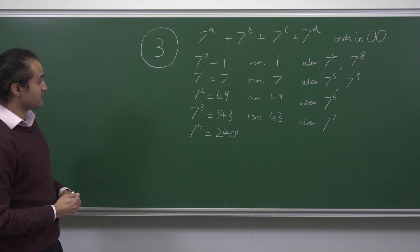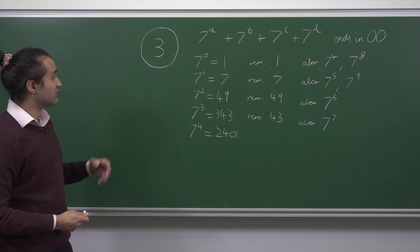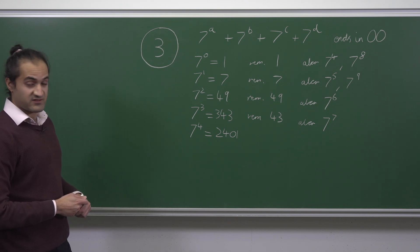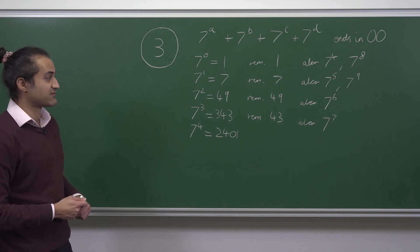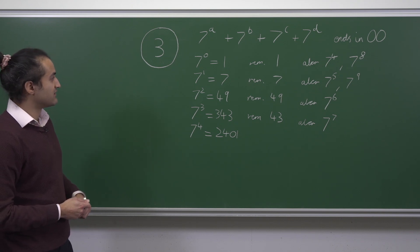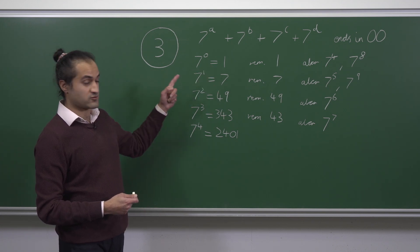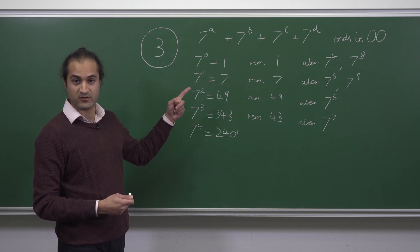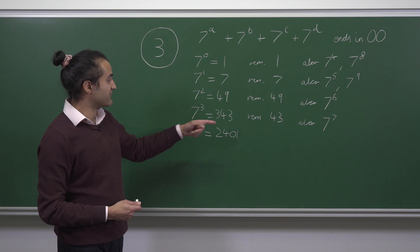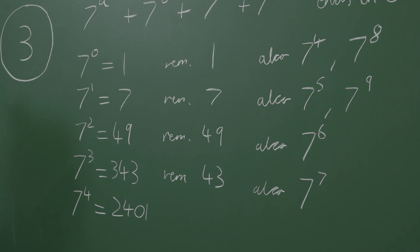Putting all this together, there are only four possible remainders for a power of 7 when divided by 100: 1, 7, 49, and 43. For remainder 1 or remainder 7, there are three choices for the single-digit exponent. For remainder 49 or 43, there are two choices. Remember that — we will use it later.